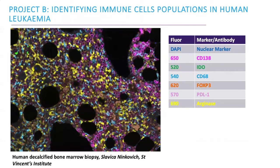Here we stained bone marrow tissue samples for a client who wanted to identify immune populations in human leukaemia. The panel comprised six antibodies including CD138, IDO, CD68, FOXP3, PDL1 and Arginase.